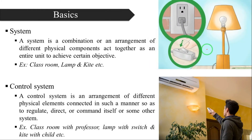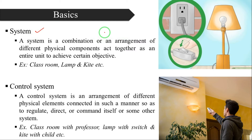Before going into the depth of the subject, we have to know the basics — what do you mean by a system? A system is a combination or an arrangement of different physical components that act together as an entire unit to achieve a certain objective.